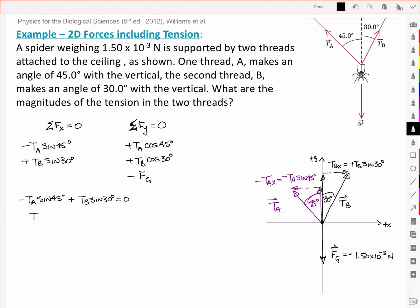If I work with that and I rearrange it, I can show that Ta is then Tb, a function of Tb, so that I can start to isolate and use that one. So it's a sine of 30 over sine of 45. And likewise from the y components I've got a Ta cos of 45 degrees.